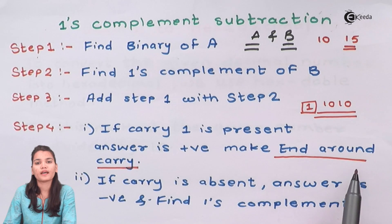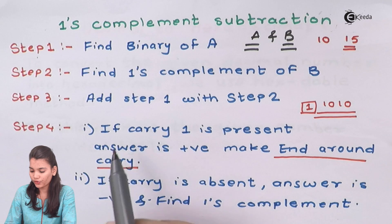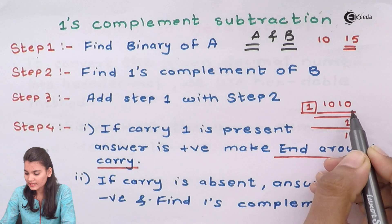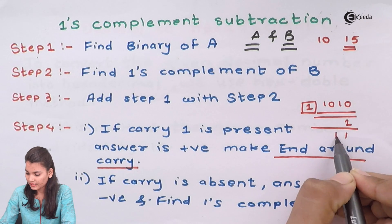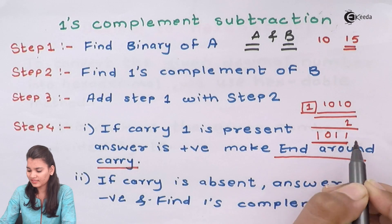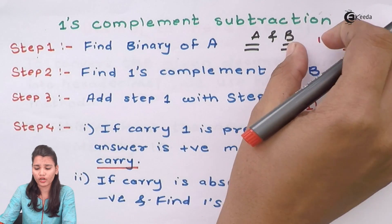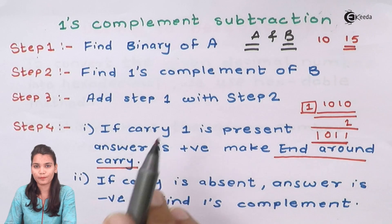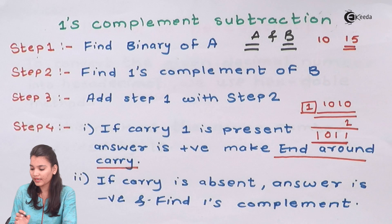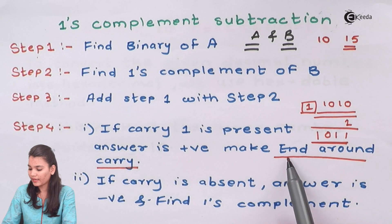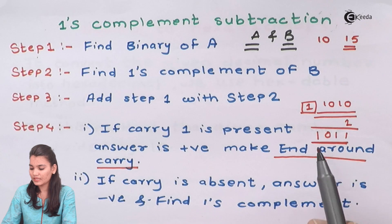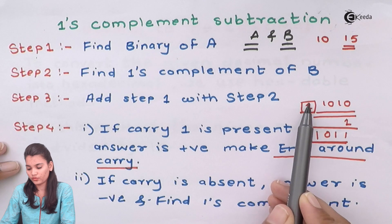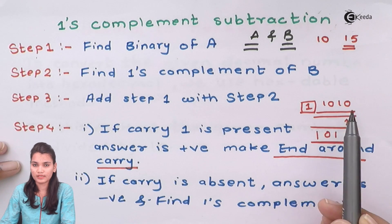What is the end-around carry? In end-around carry, if the carry is present, you simply add this carry back into the answer. For example, if the result is 1, 0, 1, 0 and carry is 1, then 0 plus 1 gives 1, and the remaining digits stay as 1 and 0. So this gives you the final answer. If the carry is 1, your answer is positive and the final correct answer is obtained after performing the end-around carry — that is, adding 1 into the result.